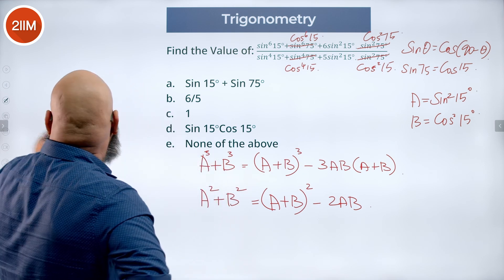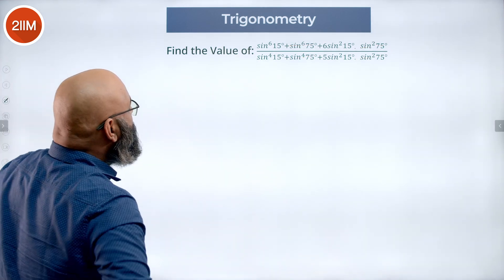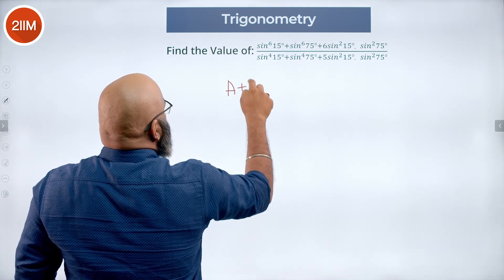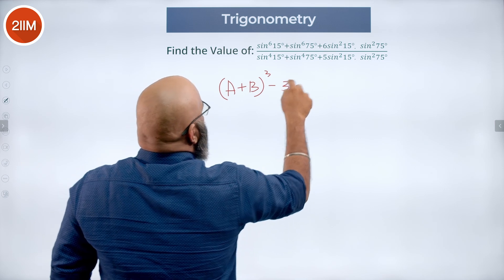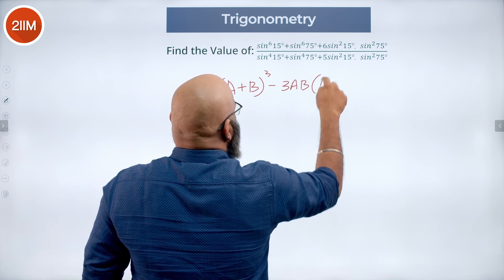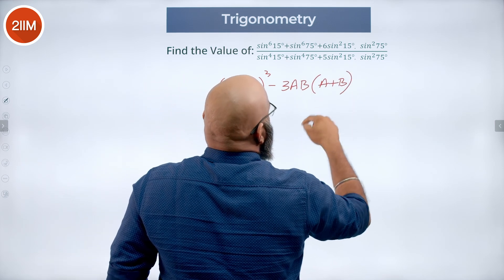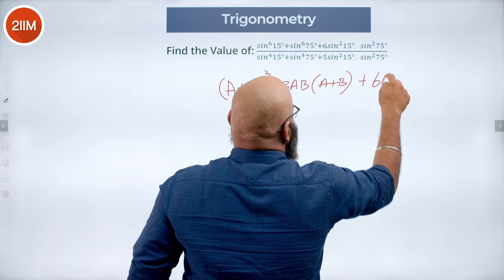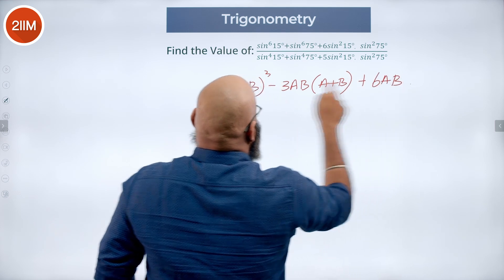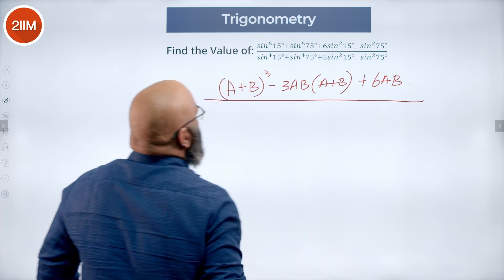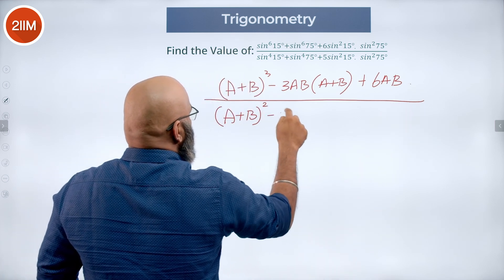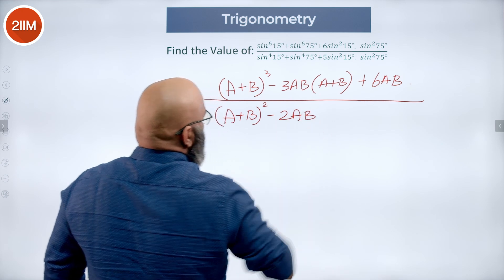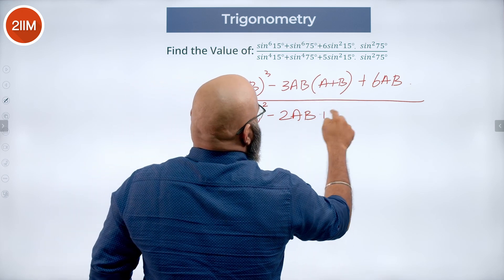In that case we get a plus b the whole cube minus 3ab into a plus b. Here we have plus 6ab. Similarly in the denominator we can rewrite that as a plus b the whole square minus 2ab and we have plus 5ab.